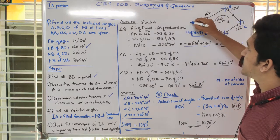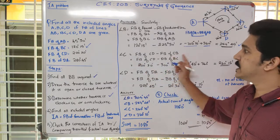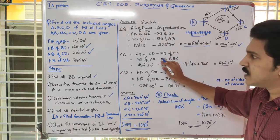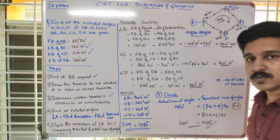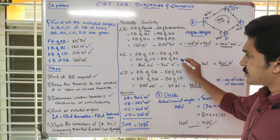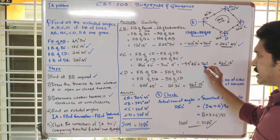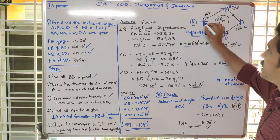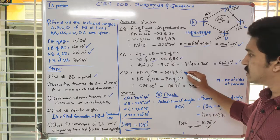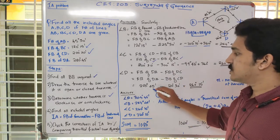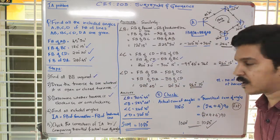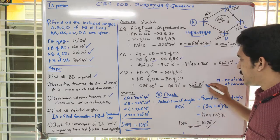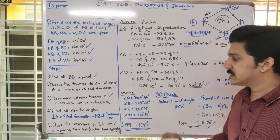Similarly, for angle C, the fore bearing of CD is given, and we convert fore bearing of CB to back bearing of BC. Substituting the known values and adding 360 to the negative result gives angle C as 360 degrees 15 minutes. For angle D, the forward line is DA and the backward line is DC. Converting fore bearing of DC to back bearing of CD and substituting, we get a positive value less than 360, so no adjustment is needed.